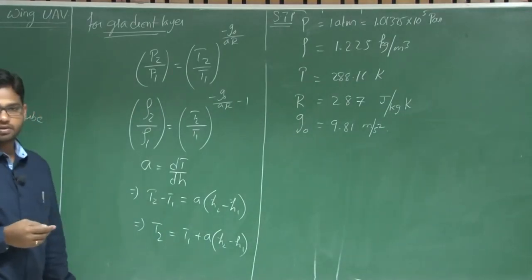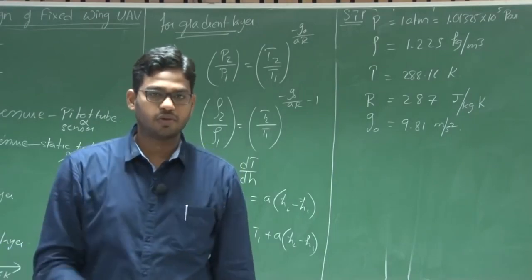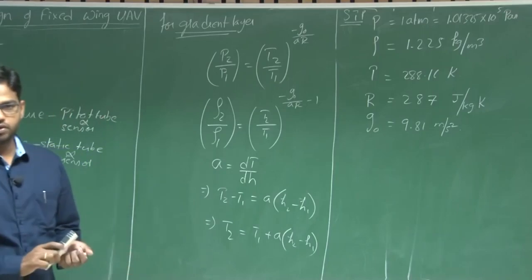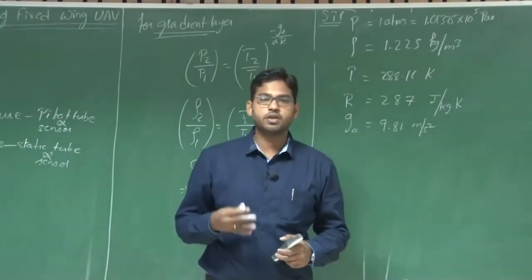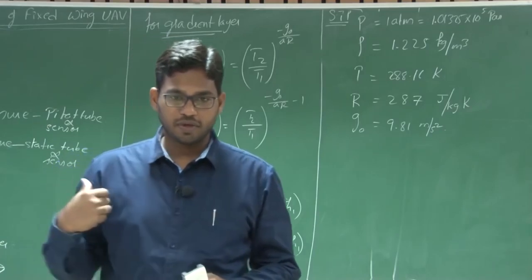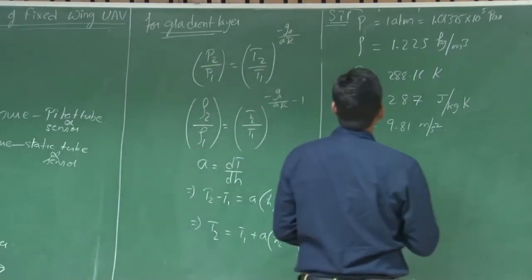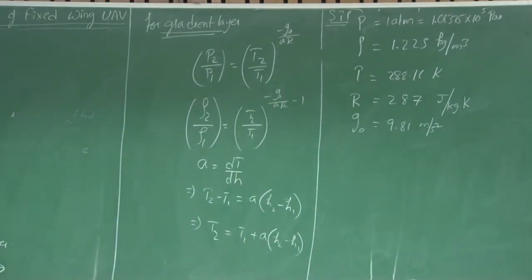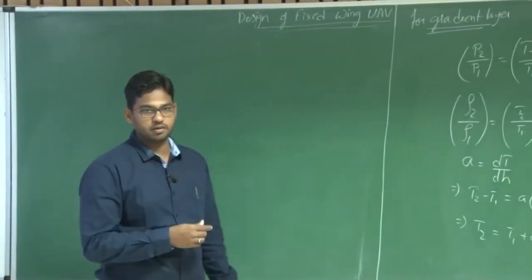Yesterday we solved a few examples in which we assumed the density altitude is known, and the corresponding velocity was obtained by means of the measured pitot pressure or static pressure. But who is giving this information about your altitude? How do you know at what height your UAV is flying? In our previous examples, we considered altitude as given — but how do you know who is going to provide that? Let us take some examples to address this.